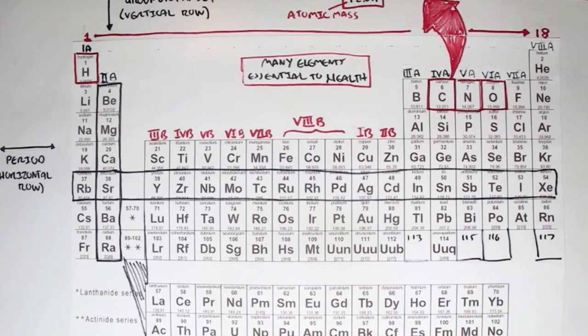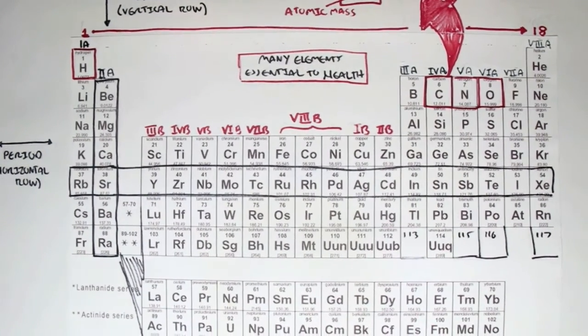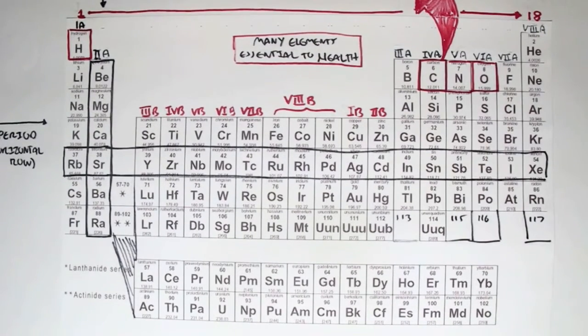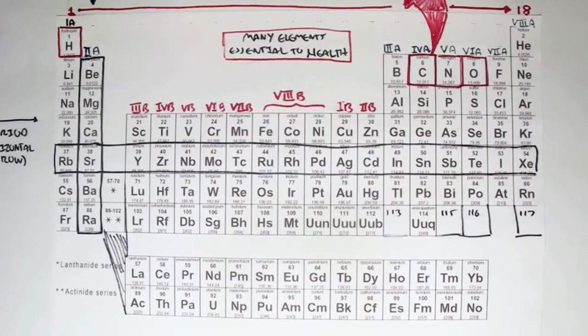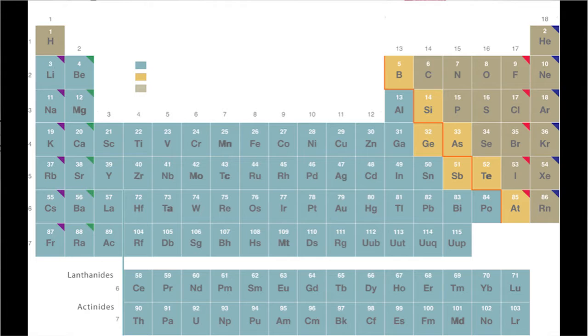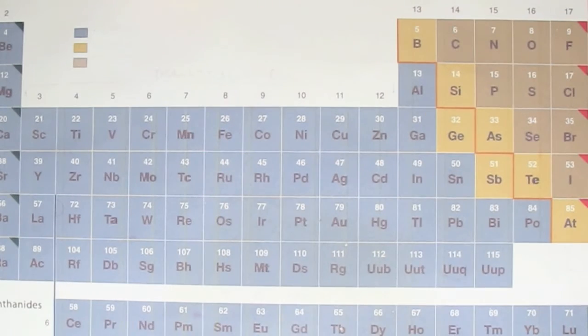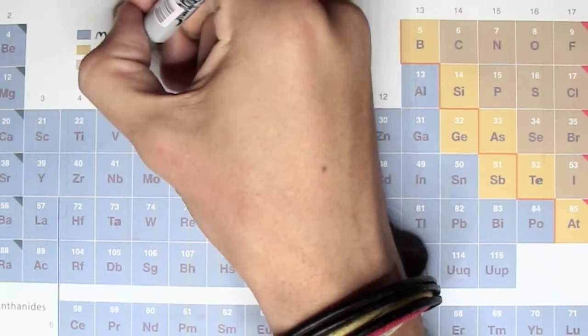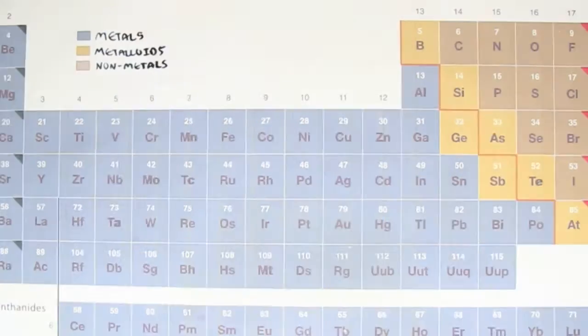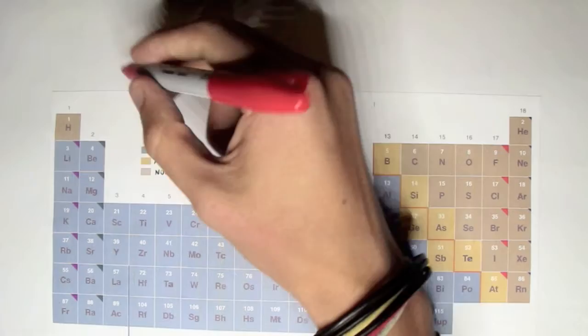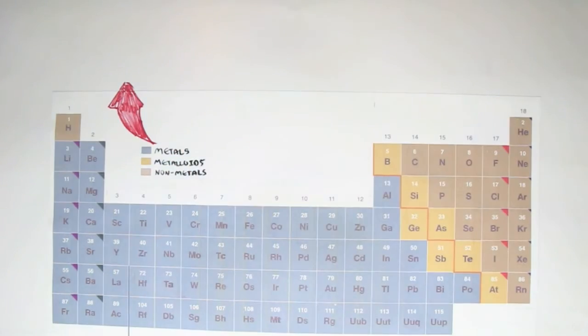Now let's look at this periodic table in a different way, grouping them into these different types of elements. In this periodic table, you can see that there are three different colors. We can classify all these elements in the periodic table into three different types: the blue ones, the metals; the orange one, the metalloids; and this light brown one, the nonmetals. Let's look at each of these separately and see what chemical properties they have and what structure they exhibit.